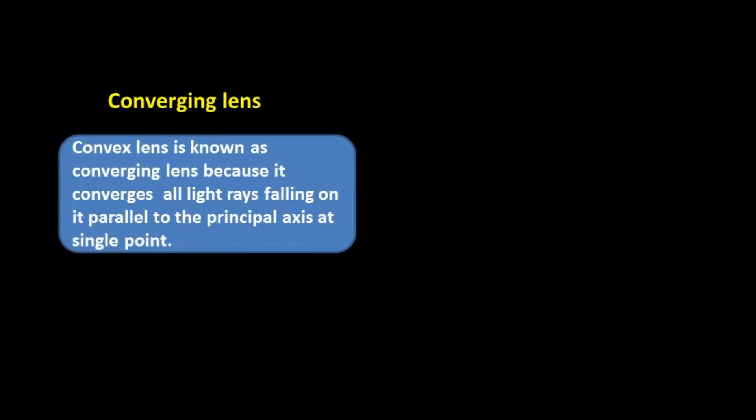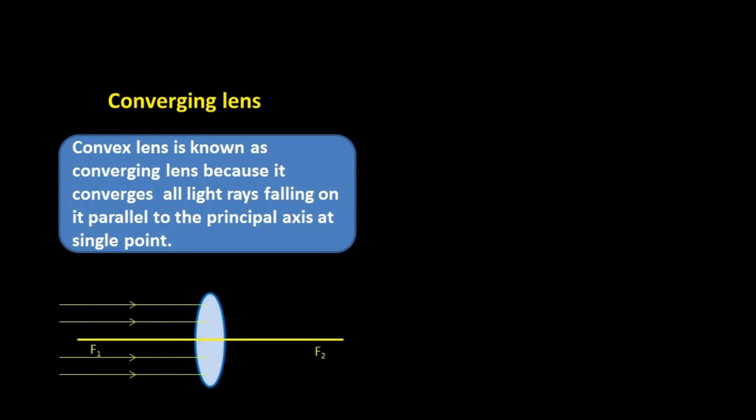Convex lens is known as a converging lens because it converges all light rays falling on it parallel to the principal axis at a single point. The rays coming from the object are parallel to the principal axis, and after refraction they meet at a single point on the principal axis — this point is known as the focus of the lens.